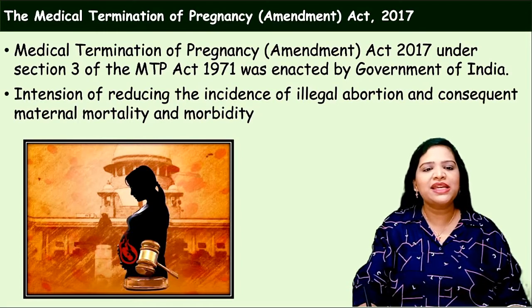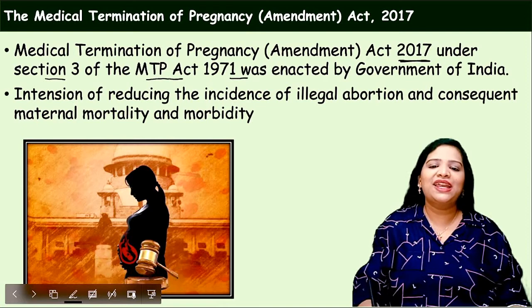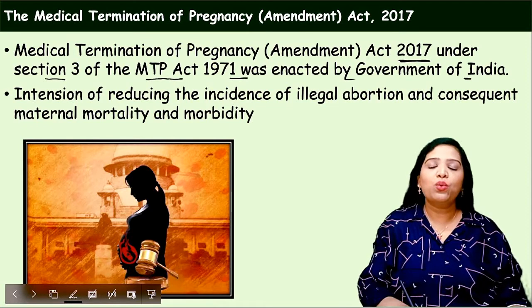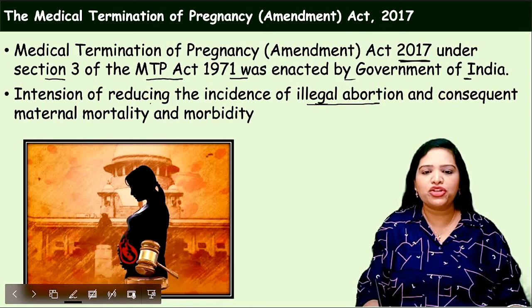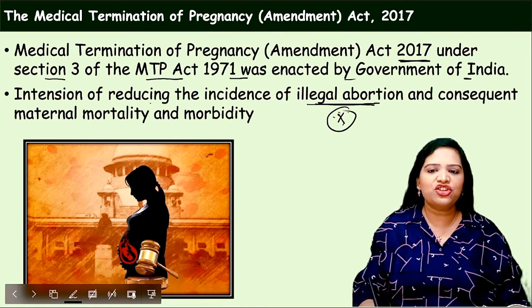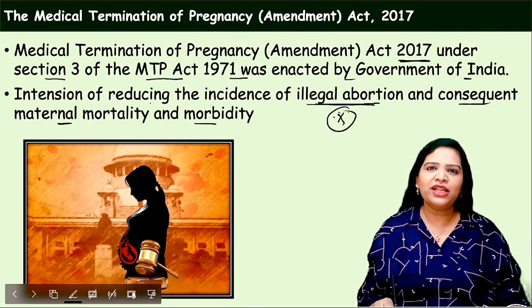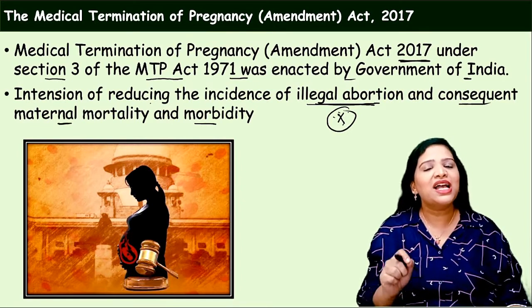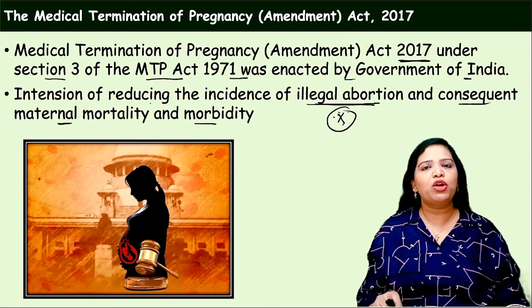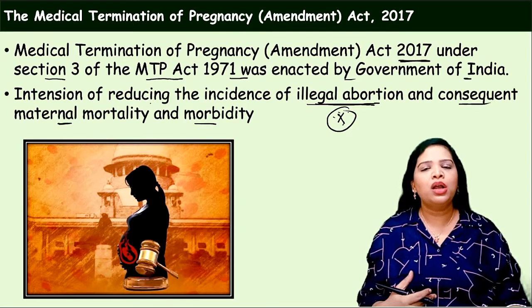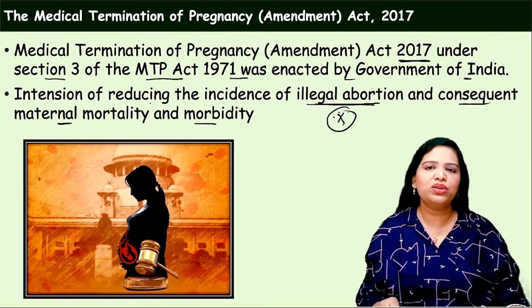The Medical Termination of Pregnancy Amendment Act 2017 under Section 3 of the MTP Act 1971 was enacted by the Government of India. The intention of this act is to reduce the incidence of illegal abortion. Illegally nobody should abort any child, because this may result in maternal mortality and morbidity. The woman has a high mortality rate and more morbidity — side effects, and second time she would not be able to conceive. To avoid all such things, this MTP Act 2017 was enacted.